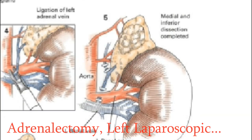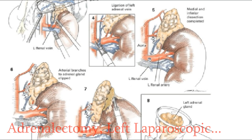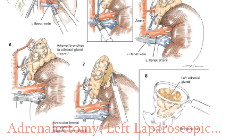Once the gland is identified, dissection begins with the ultrasonic device along the inferior border of the gland. The adrenal vein is dissected so as to visualize its entire course. It is doubly clipped on the patient's side and divided. The ultrasonic device is used to dissect around the adrenal gland. Clips may be used to secure smaller blood vessels. Small arterial vessels enter the adrenal gland like the spokes of a wheel. In some patients it is necessary to dissect the entire lateral border of the adrenal gland in order to mobilize it and retract the gland superiorly, thus permitting identification of the adrenal vein.